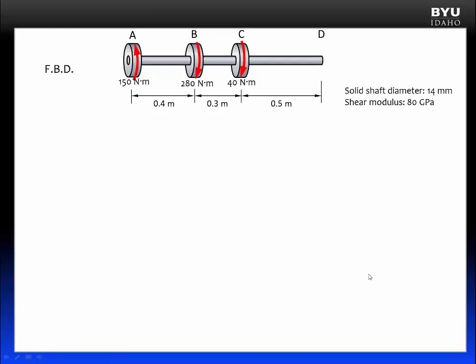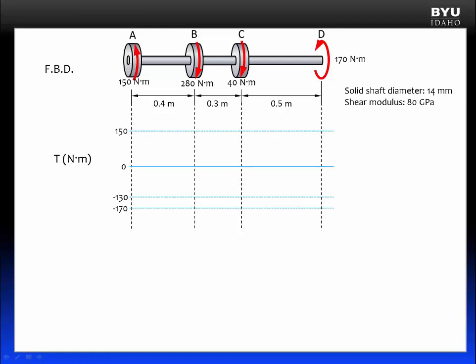The first step is to draw a free body diagram. There is a reaction torque at the wall at D. It can be found by summing the torques equal to zero, and it is equal to 170 newton meters in the same direction as the torque at A. For the next step, I am going to plot the internal torque in the shaft from A all the way to the support at D.